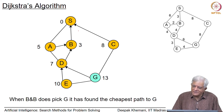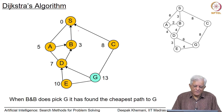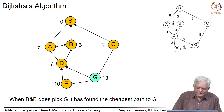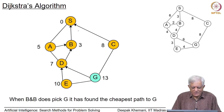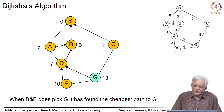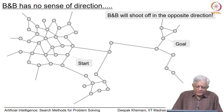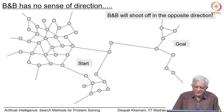Finally, when the algorithm picks node g it has found the cheapest path to the goal node. Dijkstra's algorithm is not designed to find paths to a specific goal node — it is an algorithm that gives you shortest paths to all nodes from the start node. Therefore it does not really have this sense of direction that we are interested in. This is what is meant by saying that branch and bound has no sense of direction, which also applies to Dijkstra's algorithm.